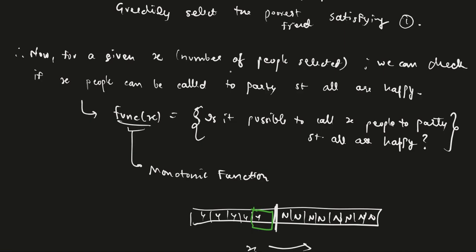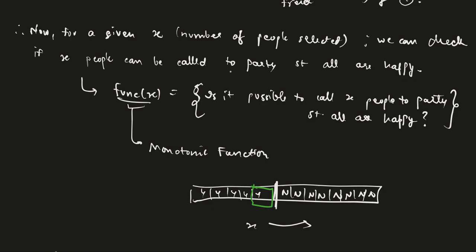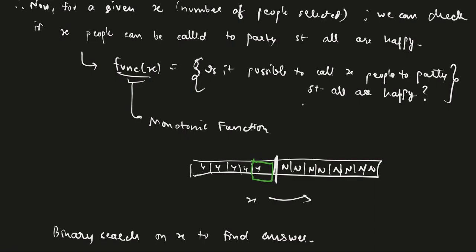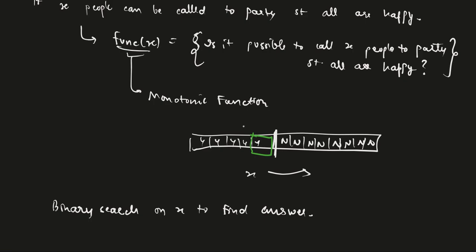So now for a given number of people selected, let's call it x, we can check if x people, if there is a valid selection of people, of x people such that all of them remain happy in the party. So let us define func(x) to be the function where it says that is it possible to call x people to the party such that all remain happy.